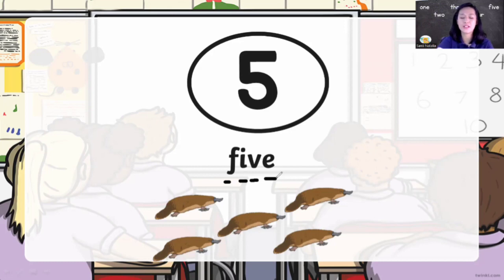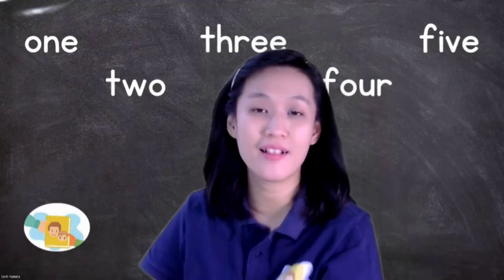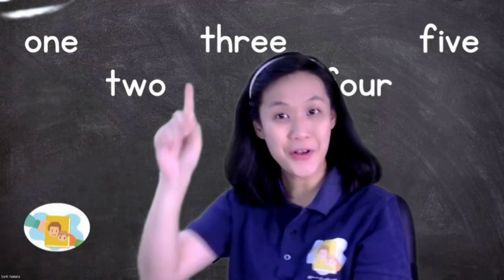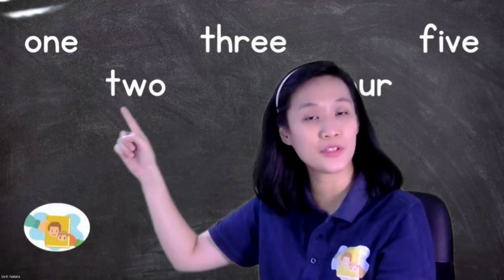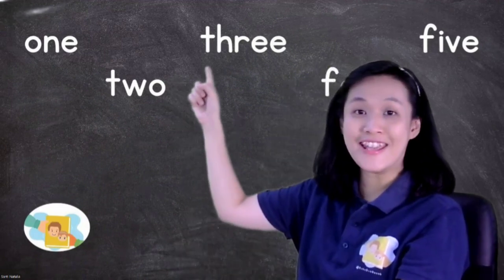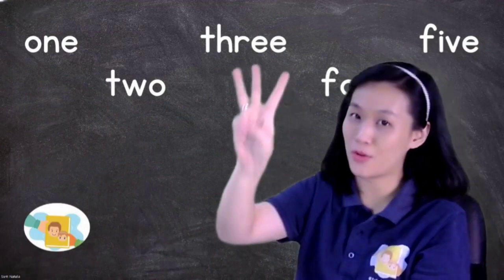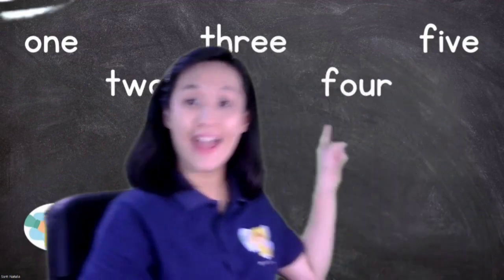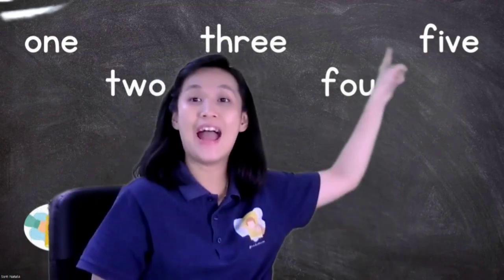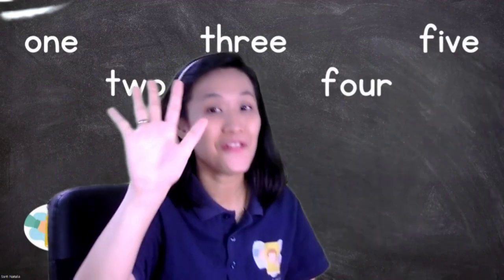Now if you are done, you can check: number one, number two, number three, number four, number five — and number zero! Then you can spell the numbers one more time. Ready? Number one: O-N-E, one. Number two: T-W-O, two. Number three: T-H-R-E-E, three. Number four: F-O-U-R, four. And number five: F-I-V-E, five. Okay, that's good, children!